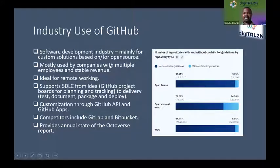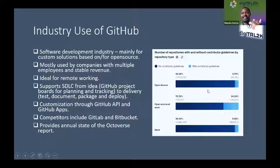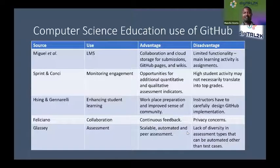GitHub does self-reflection through an annual report called the State of the Octoverse. From the 2021 report, an interesting insight analyzed the use of documentation within different repositories. The finding shows that generally, across whichever category you look at, people are not putting guidelines — they're just going straight into coding. From a teaching perspective, this reveals that there are many people coming out of universities who have been well grounded in the practice of documentation.